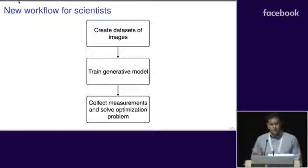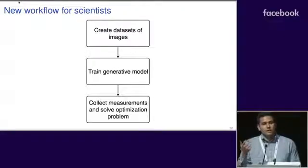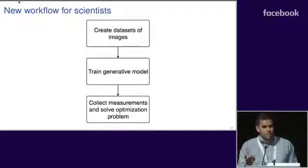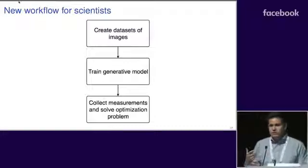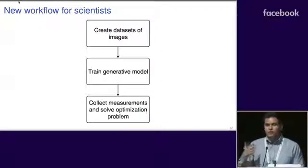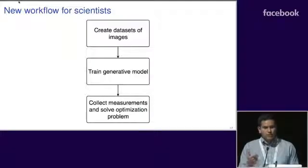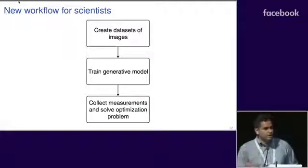This new workflow really just involves three simple steps. First, you would create datasets of images that are relevant to your problem domain. For example, for phase retrieval, this could be electron density maps, or this could be MRI scans. Once you obtain this dataset, then you can train a generative model to output these types of images. Once you have this trained generative model, you can use it as a prior by collecting your measurements and then solving the optimization problem that we mentioned before.